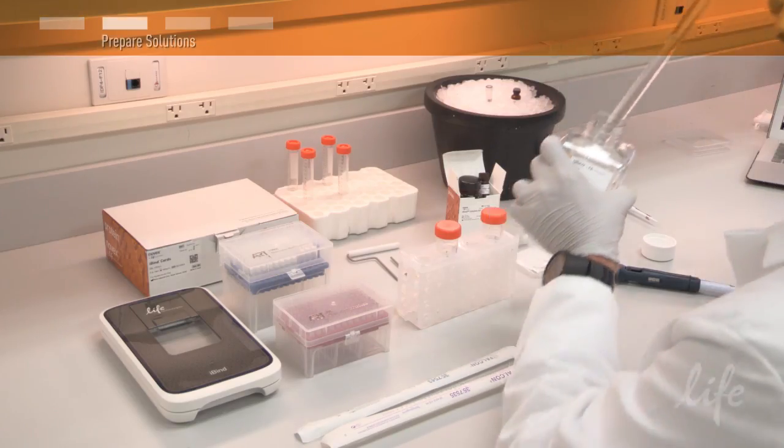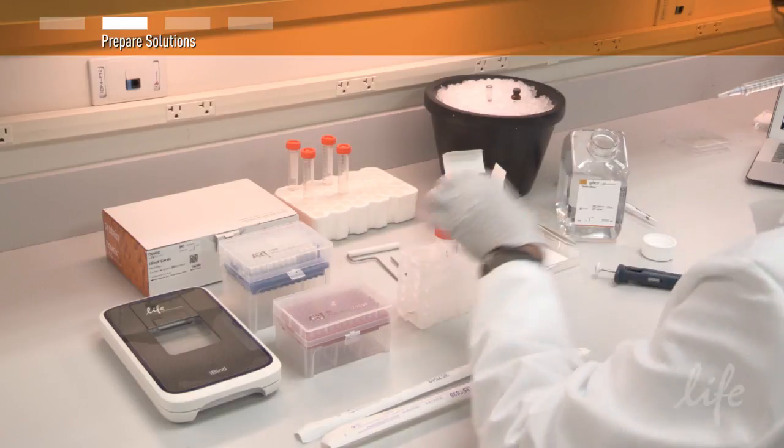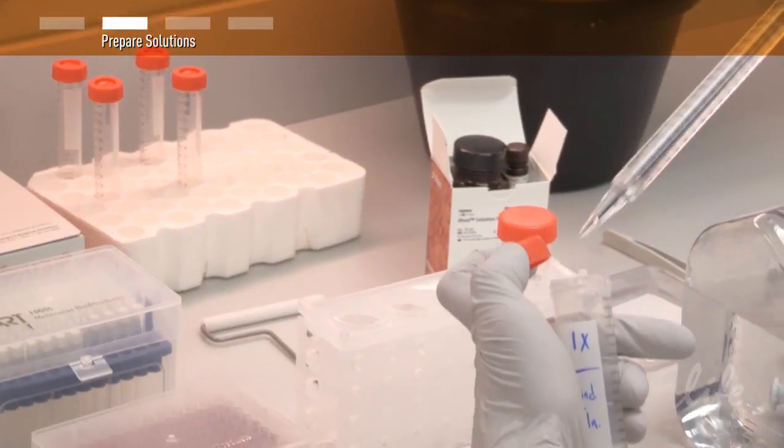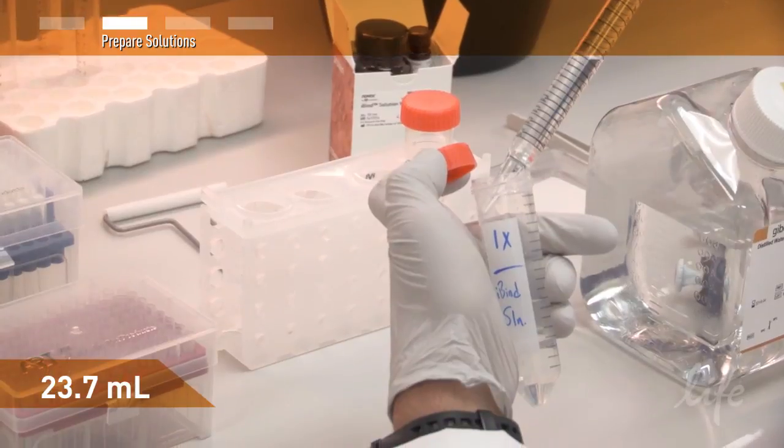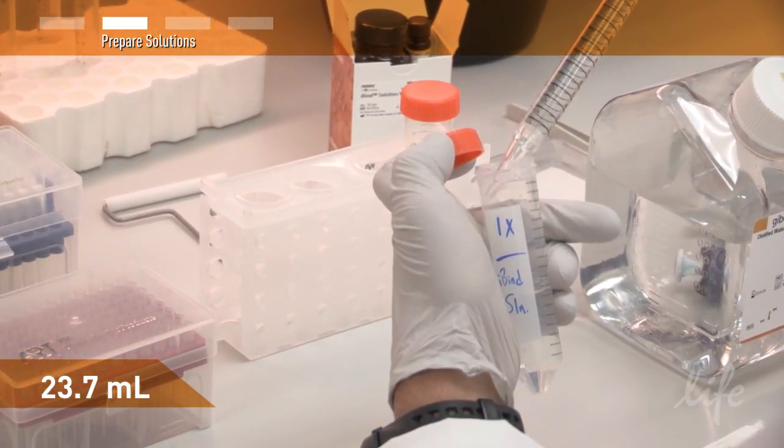The first step is to prepare the 1X iBind solution. To begin, add 23.7 milliliters of deionized water into a conical tube.